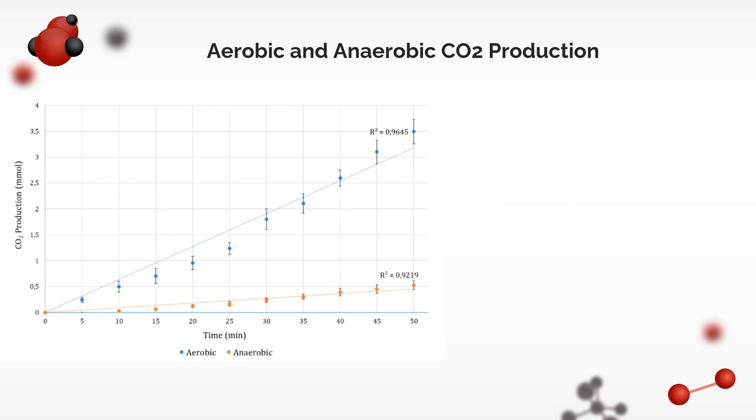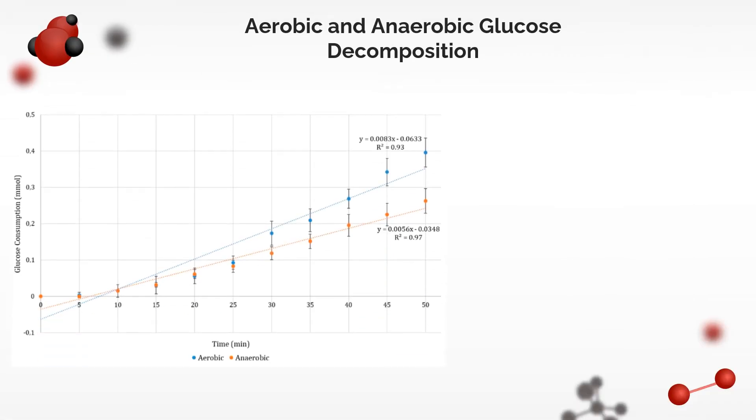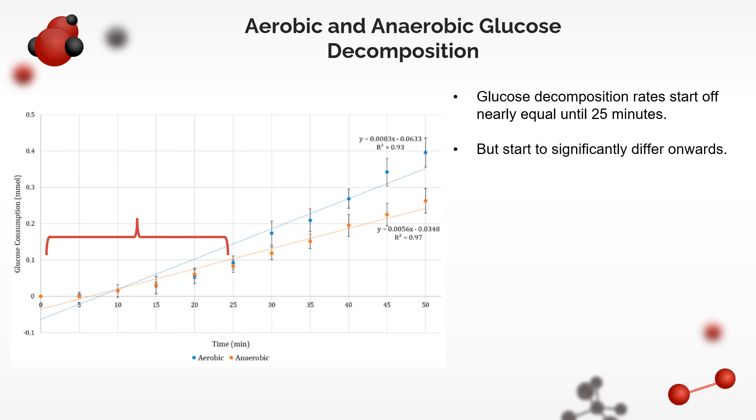We are interested in comparing the rates of reaction. The graph showing the change in millimoles of CO2 may already show that, but there's a more appropriate way to do it. We will base it on glucose, not on CO2, because the stoichiometric coefficients of CO2 in aerobic and anaerobic are different. For aerobic, we need to divide the millimoles of CO2 by 6 and by 2 for anaerobic. So the data are further processed to give the graph on the left. Glucose decomposition rates are shown to start off nearly equal for the first 25 minutes, after which they start to significantly differ. Aerobic glucose decomposition becomes increasingly faster.